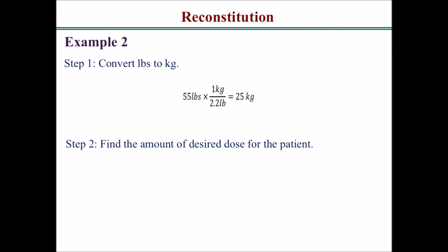Next, find the desired dose for the patient. The recommended dose is 6 milligrams per kilogram times the patient weight of 25 kilograms, which gives 150 milligrams — and that needs to be given in each teaspoonful, so 150 milligrams in each 5 milliliters.